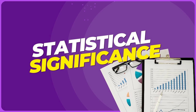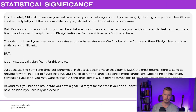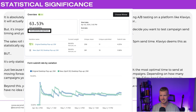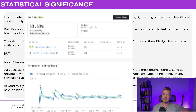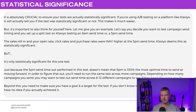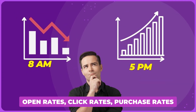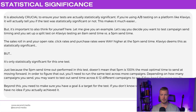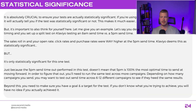Statistical significance — it is absolutely crucial to ensure your tests are actually statistically significant. Klaviyo will tell you if a test is statistically significant, but it's also important to think for yourself. For example, let's say you test campaign send time — 8 a.m. versus 5 p.m. — and purchases are way higher at 5 p.m., and Klaviyo deems this statistically significant. But it's only significant for that one test.